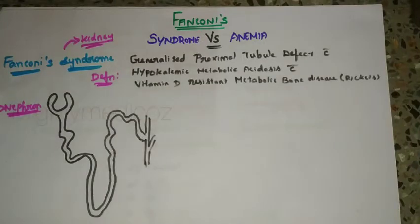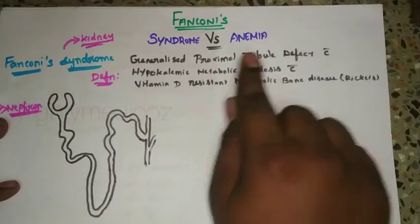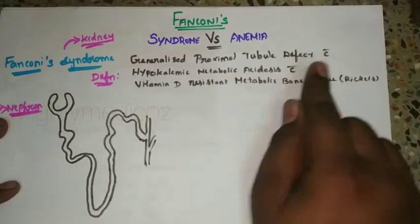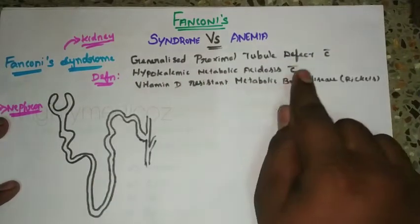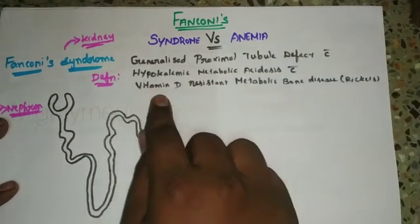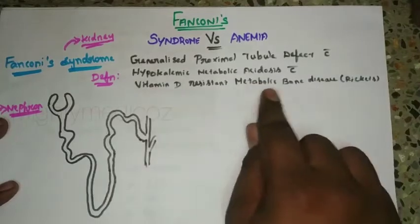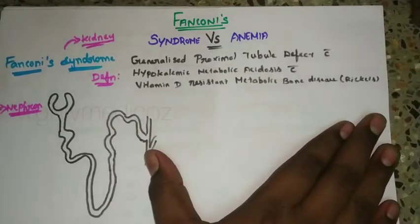The definition of Fanconi's Syndrome is: a generalized proximal tubule defect with hypokalemic metabolic acidosis, associated with Vitamin D resistant metabolic bone disease. This is the actual definition.